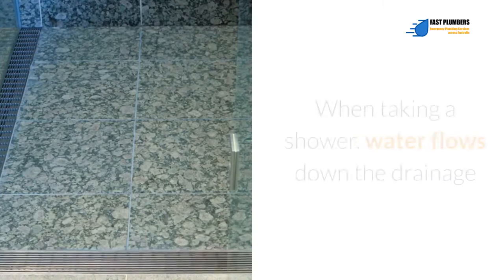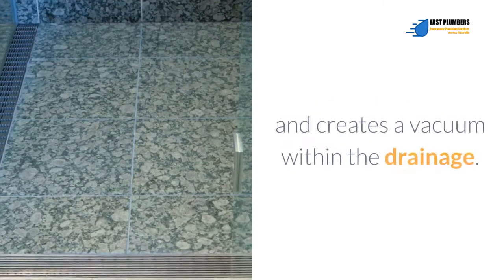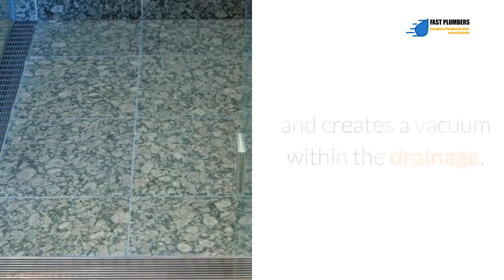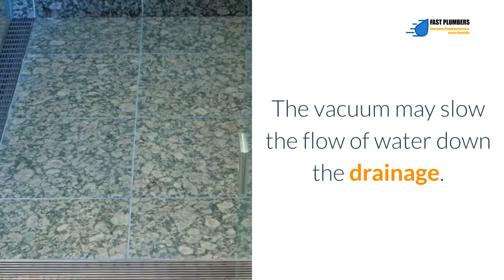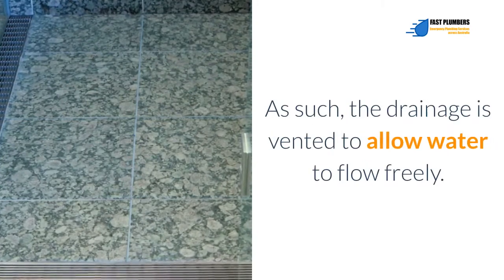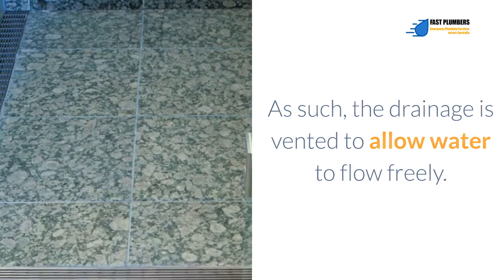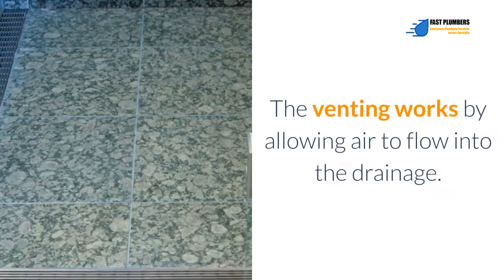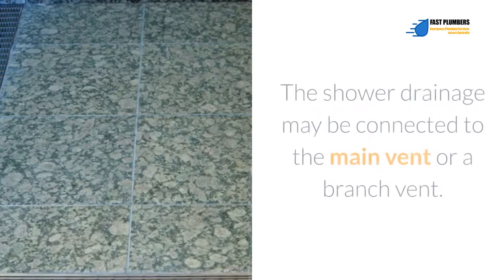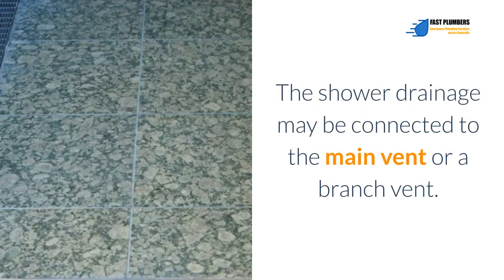Venting. When taking a shower, water flows down the drainage and creates a vacuum within the drainage. The vacuum may slow the flow of water down the drainage. As such, the drainage is vented to allow water to flow freely. The venting works by allowing air to flow into the drainage. The shower drainage may be connected to the main vent or a branch vent.